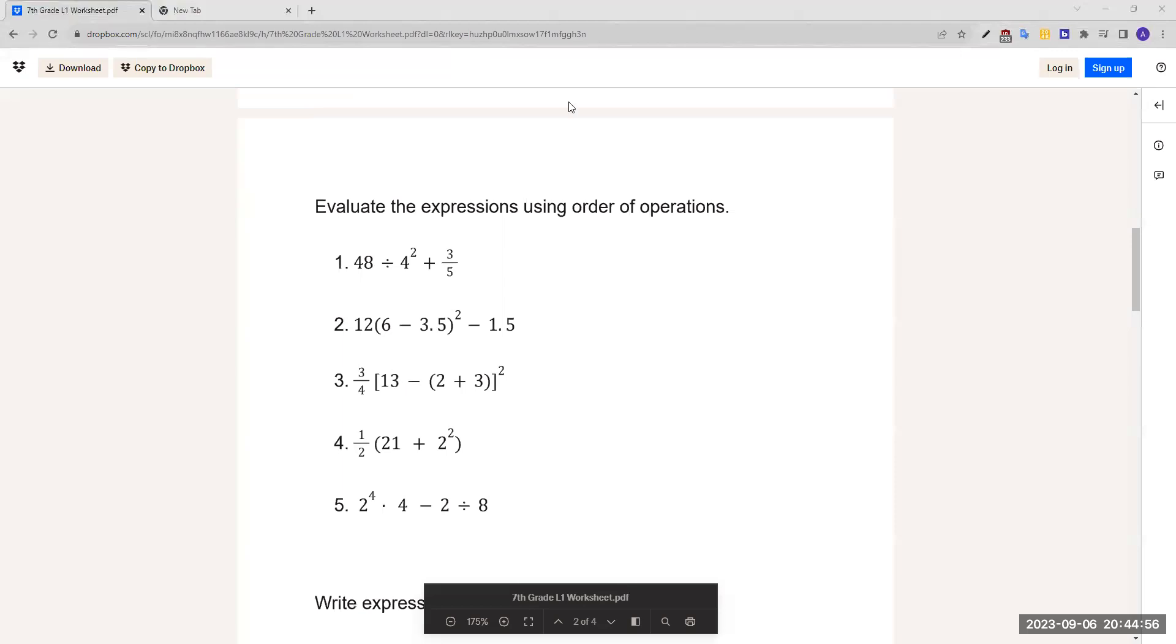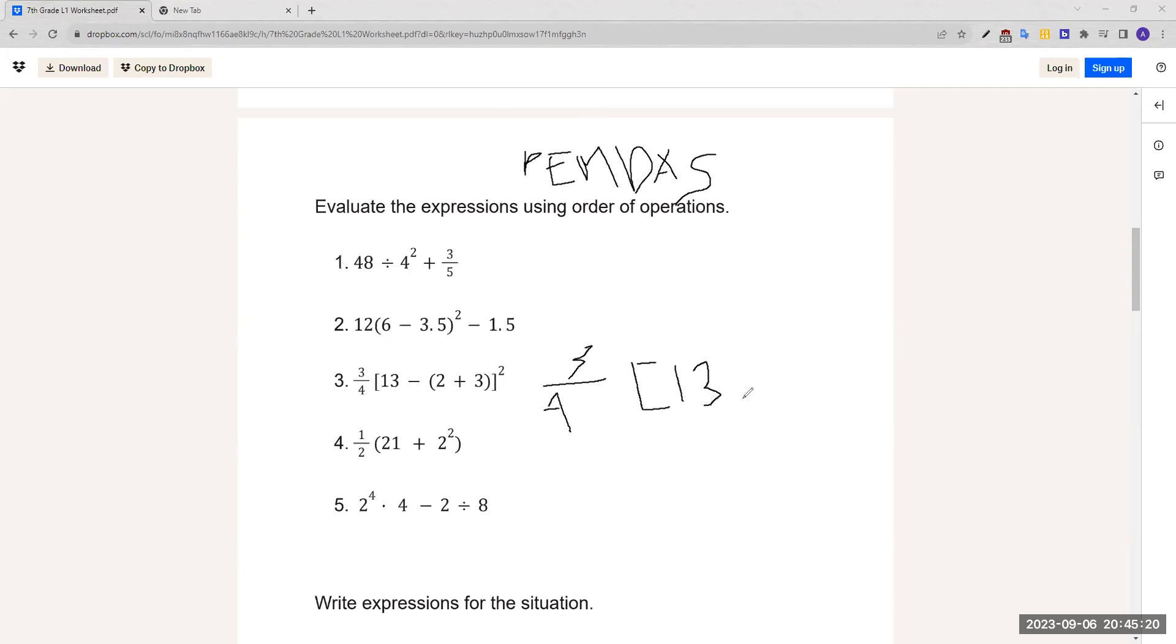Now let's do number 3: 3 over 4 bracket 13 minus parentheses 2 plus 3 bracket squared. This bracket is the same thing as parentheses, except the parentheses would come first. So we have parentheses. We do 3 over 4 bracket 13 minus 2 plus 3, which is 5. So 5 minus 5 brackets squared. 3 over 4, then we do this, which is 8 squared.